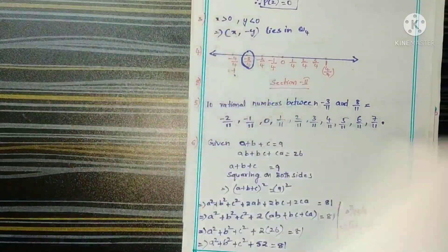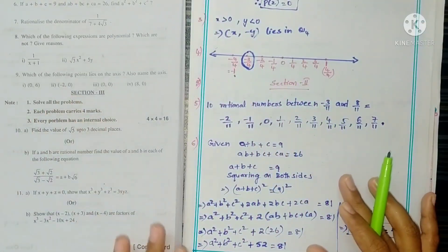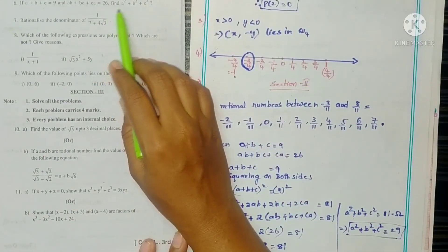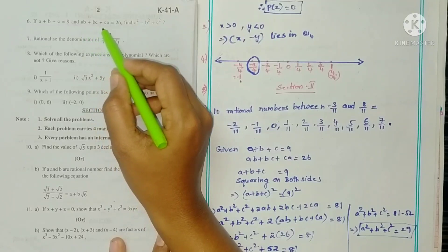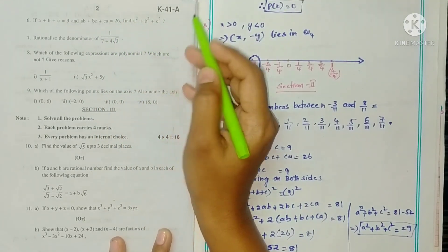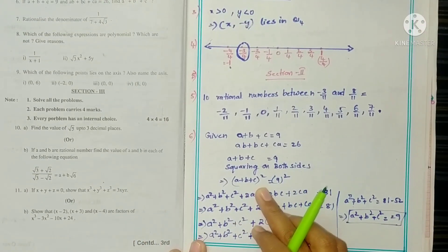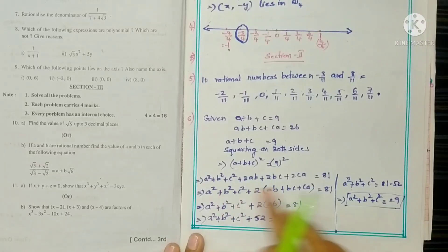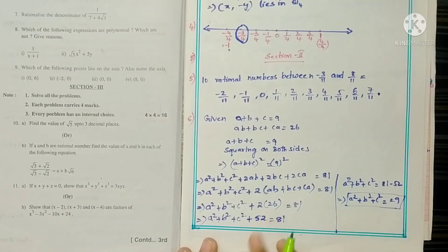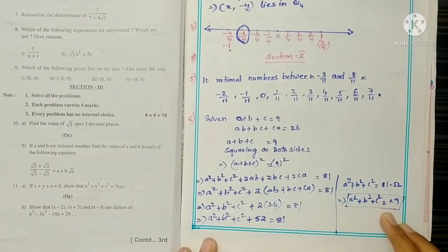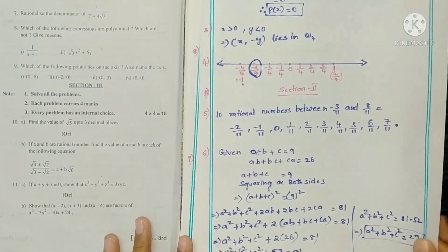Question 6: If a + b + c = 9 and ab + bc + ca = 26, find a² + b² + c². Remember the formula: (a + b + c)² = a² + b² + c² + 2(ab + bc + ca). Substitute the given values and transpose to get a² + b² + c² = 29.